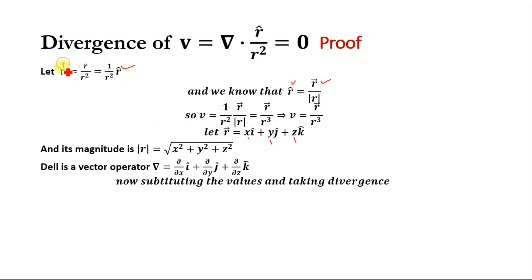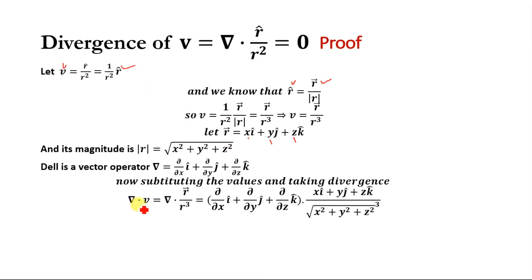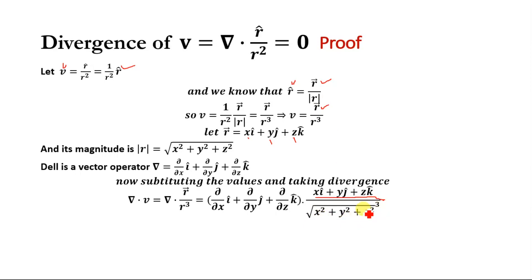Now taking the divergence of V, we get del·V = del · (r⃗/r³), which expands to [(∂/∂x)i + (∂/∂y)j + (∂/∂z)k] dot [(xi + yj + zk) / (x² + y² + z²)^(3/2)], since r³ = (x² + y² + z²)^(3/2).